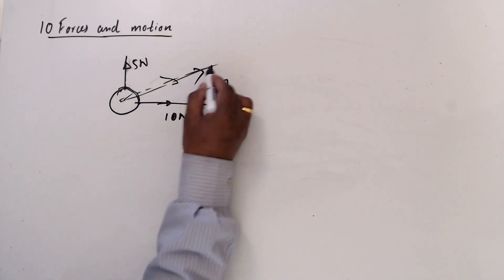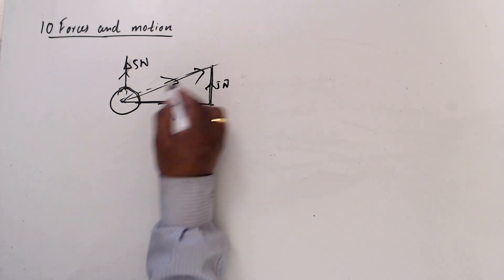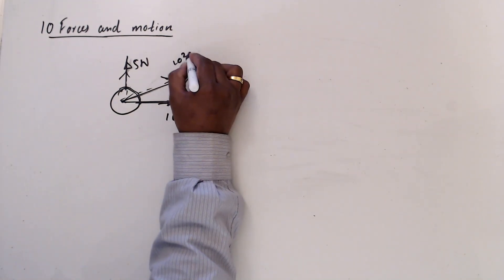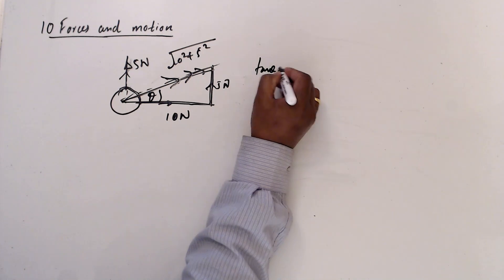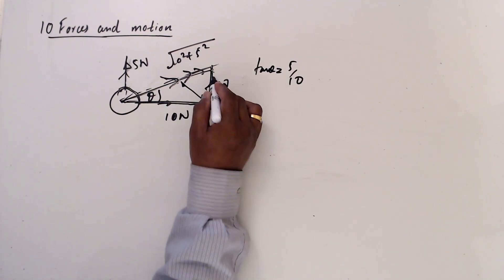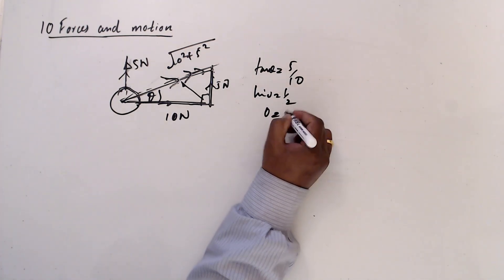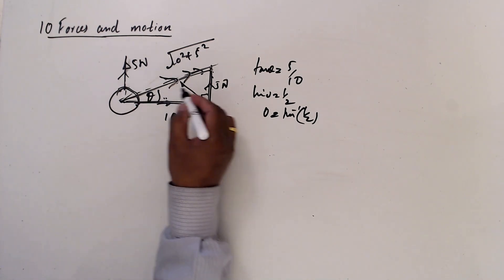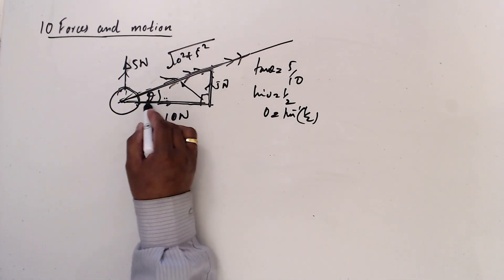So I draw a diagram. This 5 Newton is parallel to this one. The resultant force is in this direction and the magnitude is the square root of 10 squared plus 5 squared. This angle is theta. Tan theta equals opposite divided by adjacent, which is 5 over 10. So tan theta equals one half, and theta equals tan inverse of one half. So this is the angle. The particle will accelerate in this direction — that is the resultant force direction.